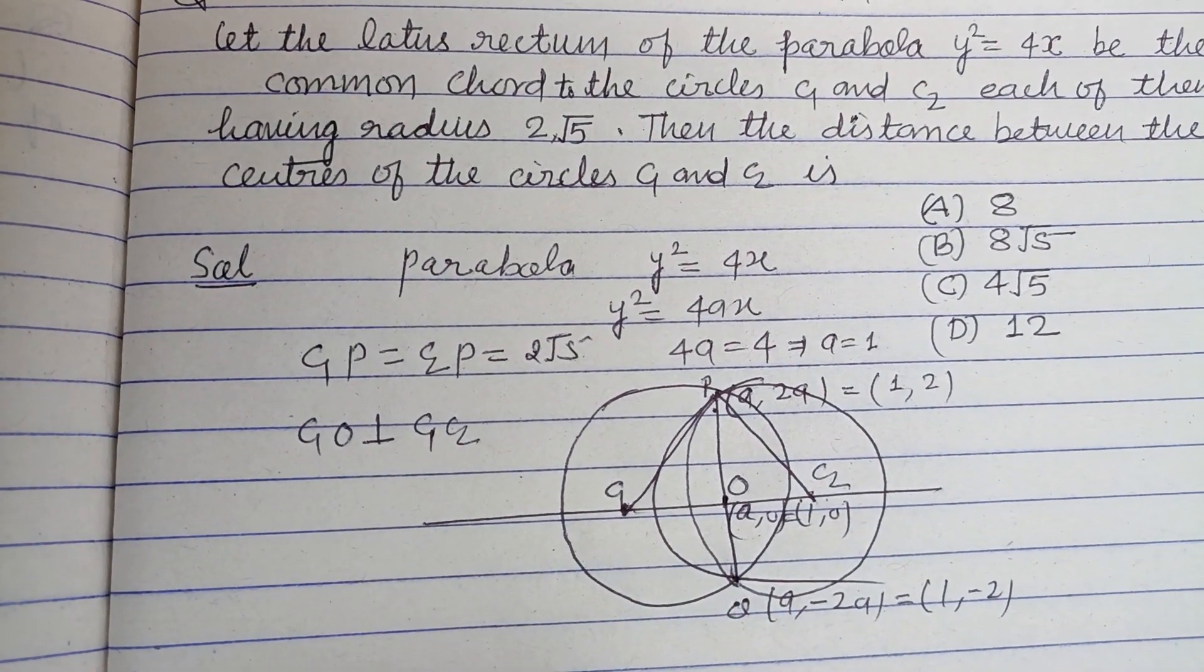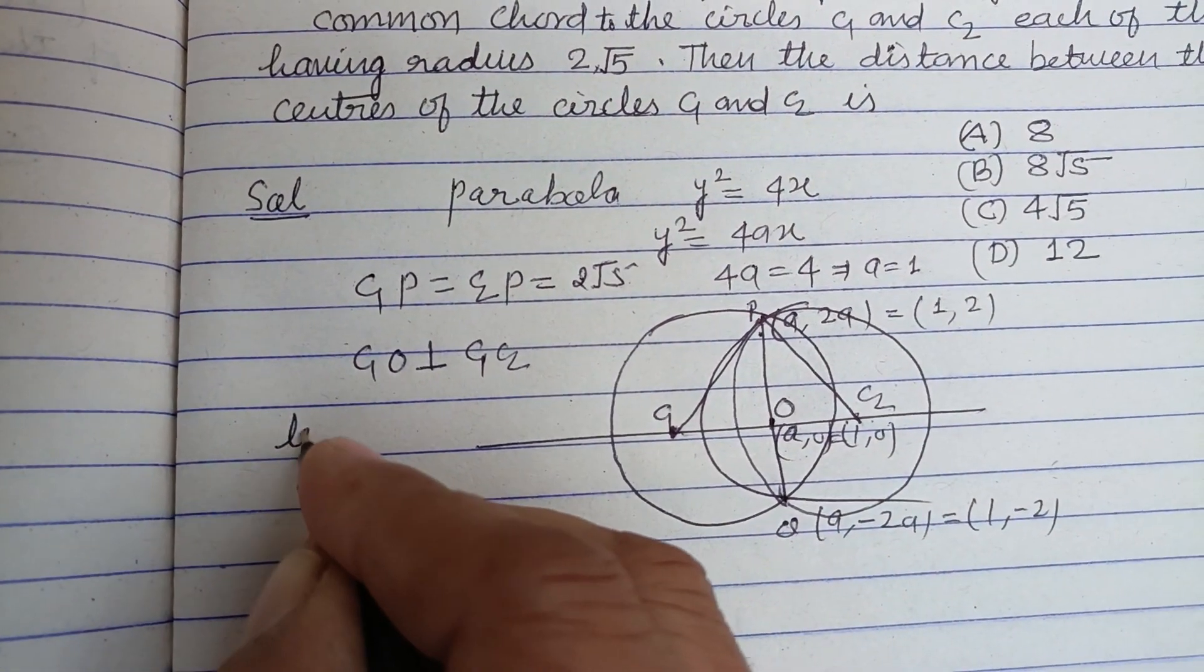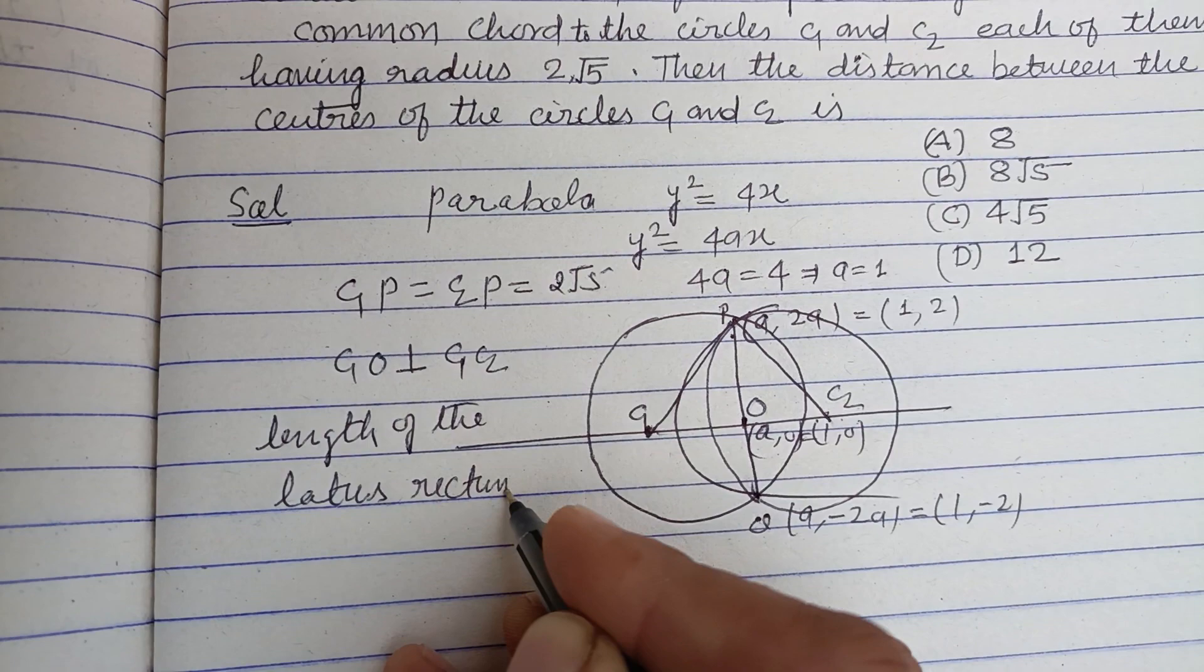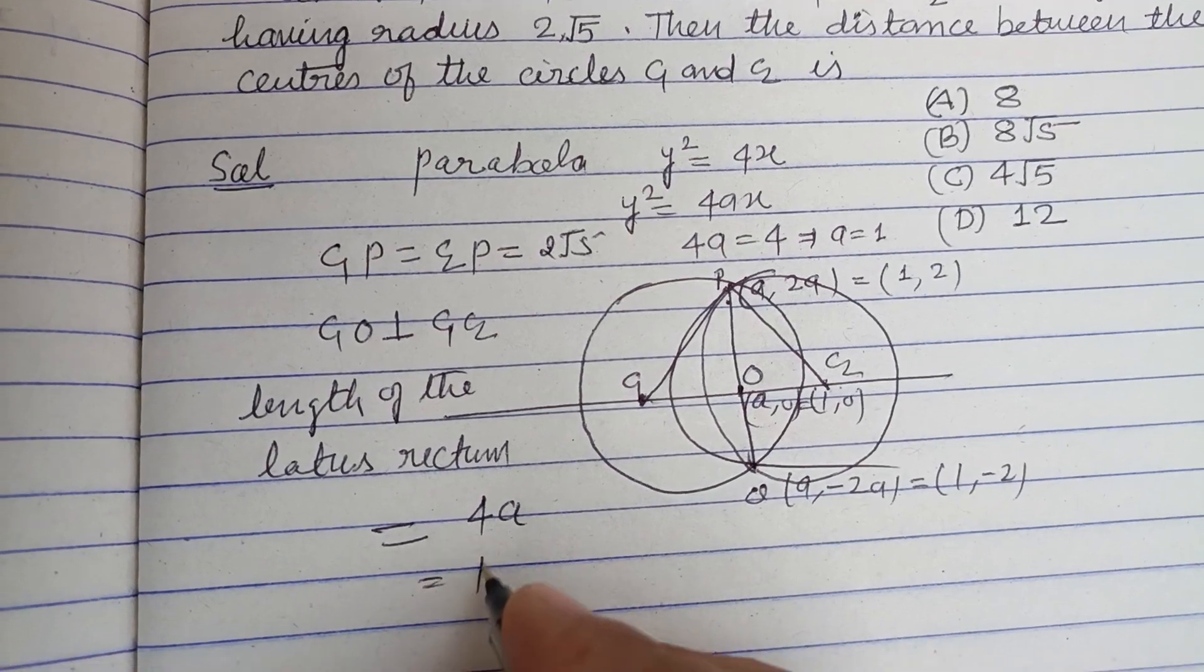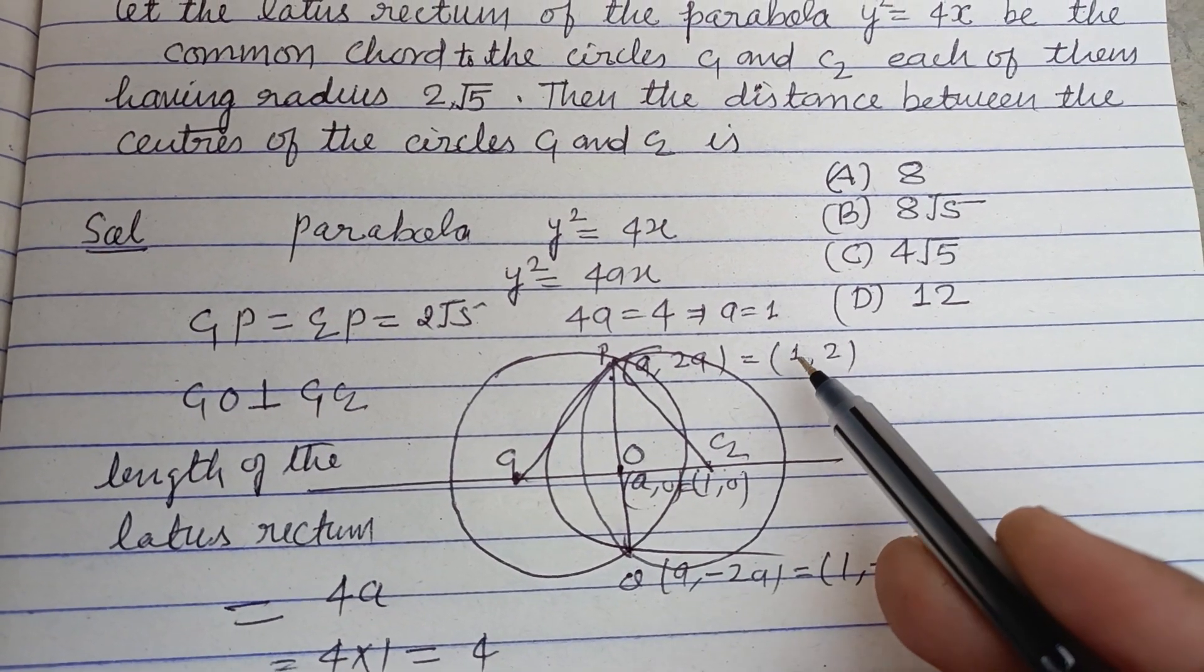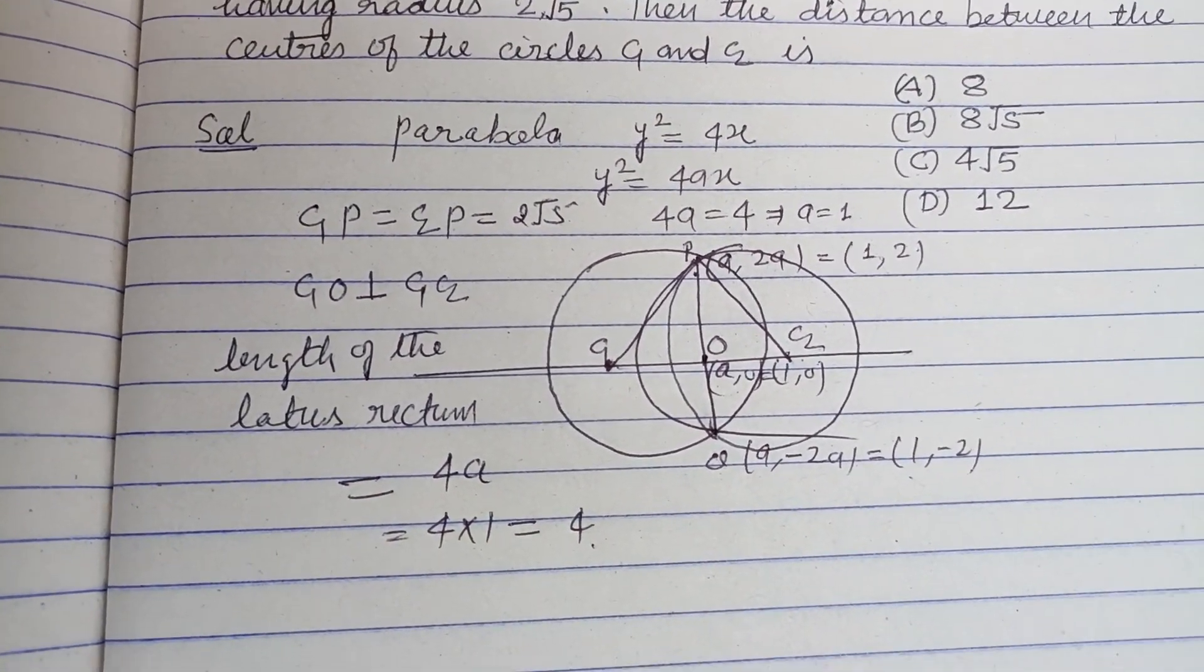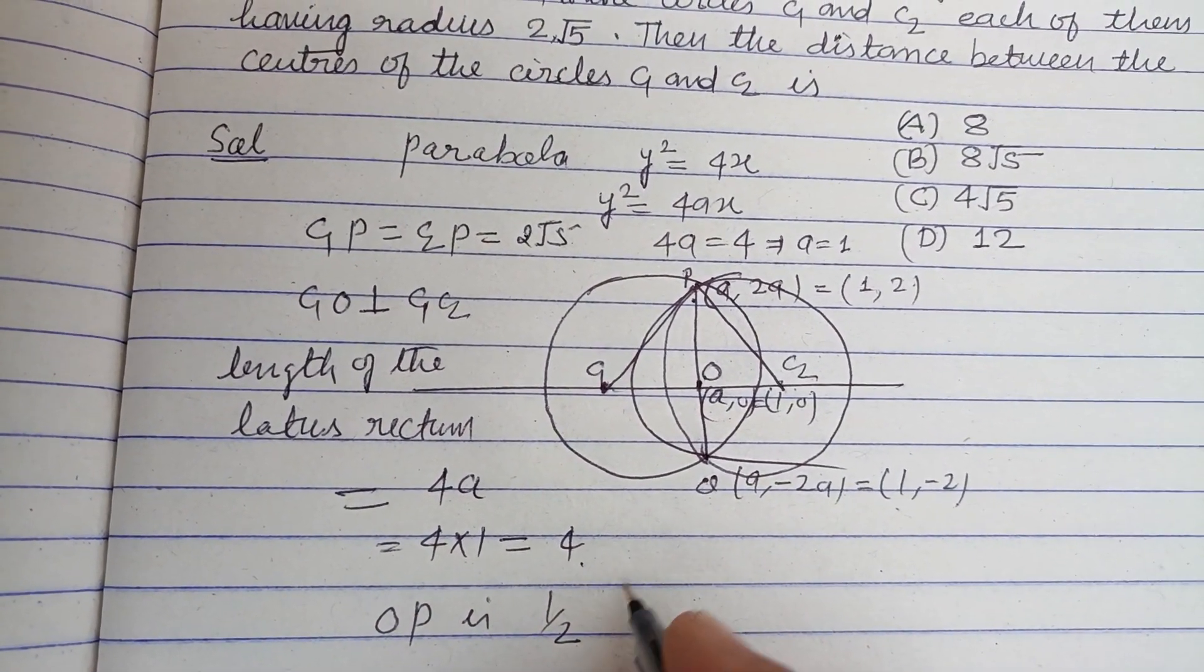The length of the latus rectum equals 4a, so 4 × 1 = 4. You can also find this by distance formula between points P and Q, which is (1, 2) and (1, -2), which also gives 4. Therefore OP is half of PQ, so half of 4 is 2.